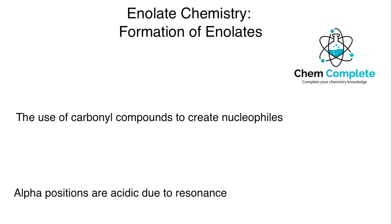Hi there everybody, welcome to another Chem Complete lecture. In today's lecture we are going to be taking a look at enolate chemistry, which I realized is something I haven't brought up on the channel yet. Enolates are compounds that are formed through the use of bases with carbonyl compounds, and they're usually a precursor to different condensations or types of reactions that most students will learn at the very end of organic chemistry. We are going to take a deep dive into enolates in this lecture series and we will cover formation of enolates and discuss what they are in this lecture right now.